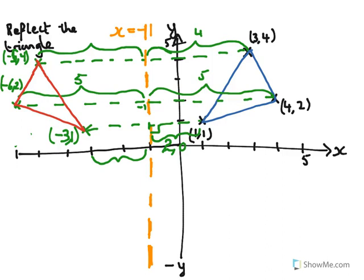Not only do we know what the coordinates are of the reflection, that this coordinate here of 1, 1 is now the coordinate minus 3, 1. The coordinate 4, 2 is now the coordinate minus 6, 2 in the reflected image. And the coordinate of the original triangle at 3, 4 is now the coordinate minus 5, 4 in the reflected image. So, now we've reflected this triangle perfectly around the line x equals minus 1. And this is how we make reflections.